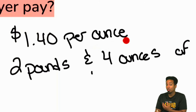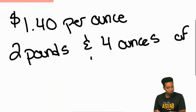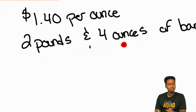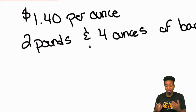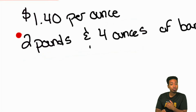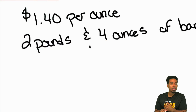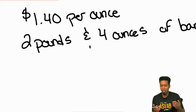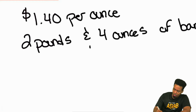We have to play a very careful game about how we respect units. This does not say per pound — it says per ounce. That's a problem, because are we given the weight of the bananas in just ounces? Absolutely not. So the step we need to take is to convert the two pounds and four ounces into just ounces.